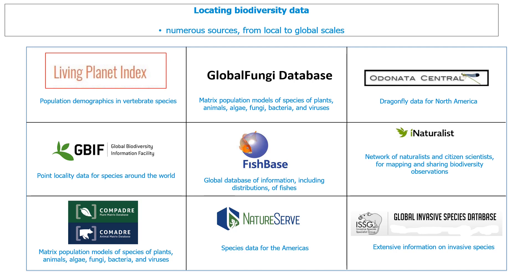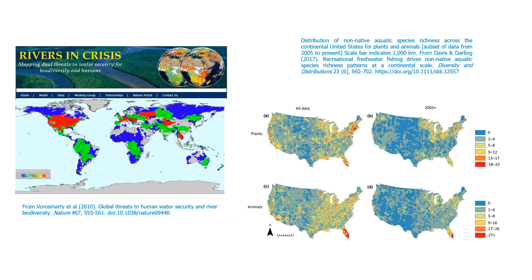Think carefully about the scale at which the data have been collated and presented. For example, the map on the left shows global patterns for non-native fishes — it's quite coarse-grained and is only really useful at large regional levels. Whereas the map on the right shows distributions of non-native plants and animals for the US at a much finer spatial granularity, which is more appropriate for studies of ecosystem condition in river basins. In some instances, it might be difficult to find those more fine-grained data.